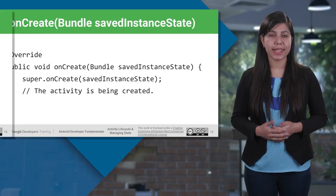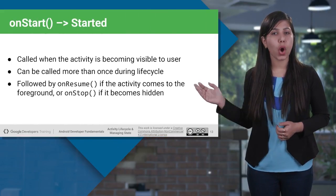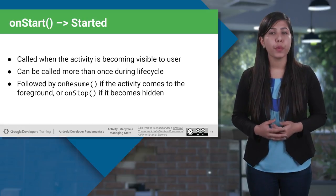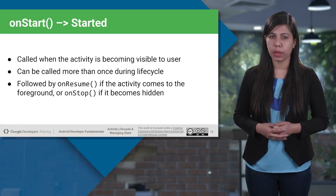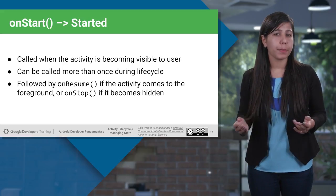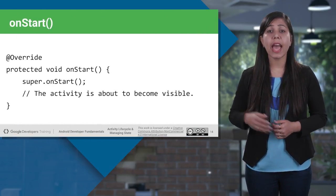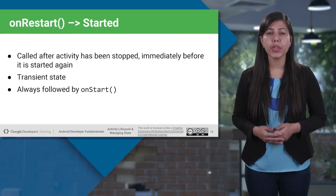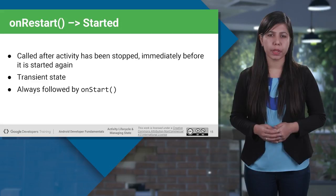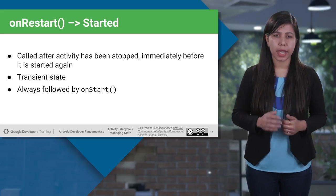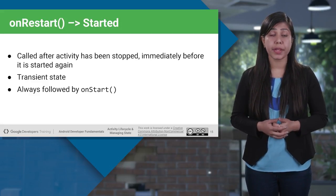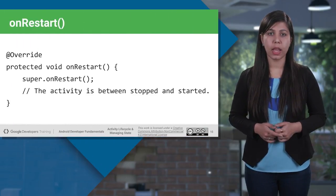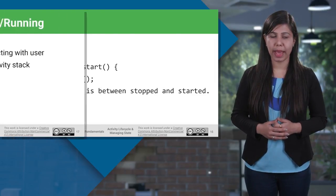In onStart, the activity is becoming visible to the user, which is followed by onResume if the activity comes to the foreground, or onStop if it becomes hidden. onRestart is called when your activity has been stopped just before it gets started again. It is a transient state which occurs very fast and is always followed by onStart.